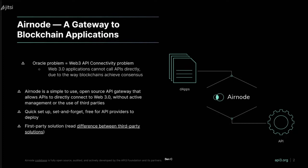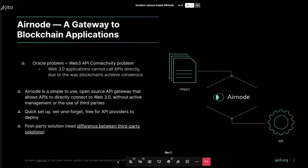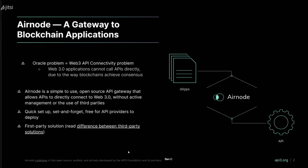We think the way oracles are currently implemented has room for improvement, which is the segue into Airnode. Airnode connects APIs and turns them into something that can be requested by a smart contract function. It's a very lightweight, open-source blockchain oracle that's easy to deploy to API endpoints. Once deployed, it's set-and-forget and completely free for providers to use — what we call a first-party oracle solution.